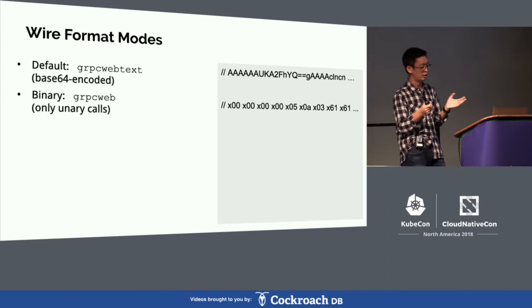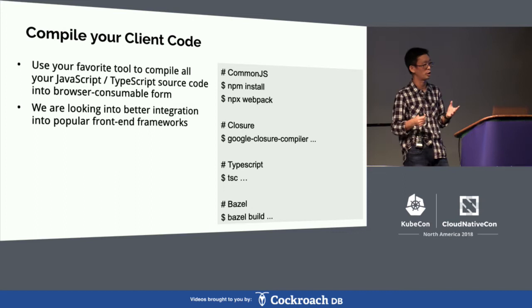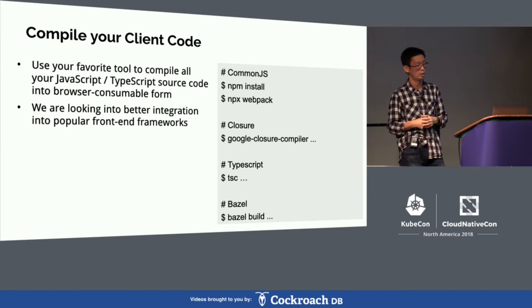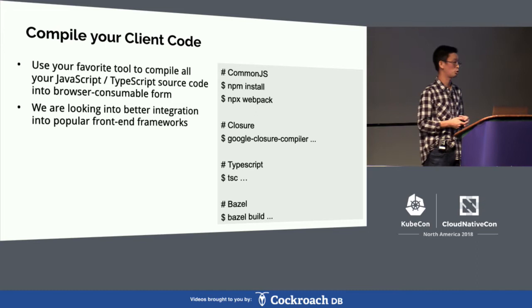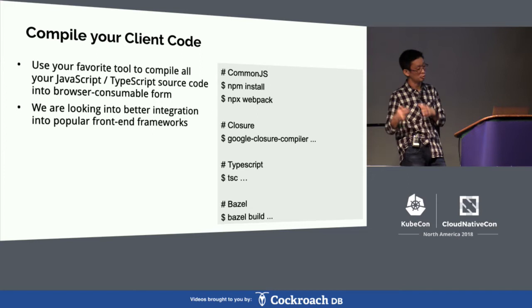Once you've written all this code in TypeScript, CommonJS, or Closure style, you can compile it with your favorite tool. There are a myriad of front-end tools to do this. If you use CommonJS style, you can use npm install and webpack to pack all dependencies into a single browser-consumable JS file. Or you can use Google Closure Compiler for Google.require statements. For TypeScript, use tsc. We also have Bazel support — Bazel is a build system open-sourced from Google — to build all your dependencies.